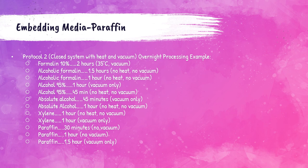Protocol two is a closed system with heat and vacuum. The tissue is placed in 10% formalin for two hours at 35 degrees Celsius with vacuum, then an hour and a half of alcoholic formalin with no heat or vacuum, then one hour of alcoholic formalin with no heat or vacuum. Then one hour of 95% alcohol with vacuum only, 45 minutes of 95% alcohol with no heat or vacuum, 45 minutes of absolute alcohol with vacuum, one hour of absolute alcohol with no heat or vacuum, one hour of xylene with no heat or vacuum, one hour of xylene with vacuum. Then 30 minutes of paraffin with no vacuum, one hour of paraffin with no vacuum, and one and a half hours of paraffin with vacuum.